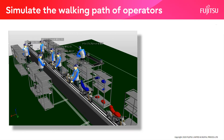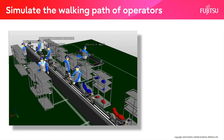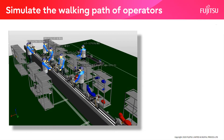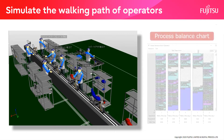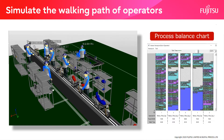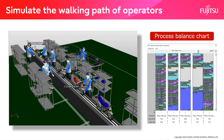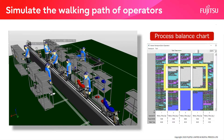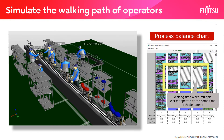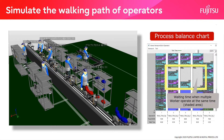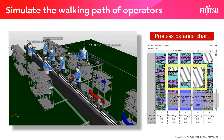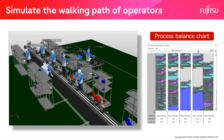The walking time is automatically calculated according to the distance the worker travels to pick up parts. If multiple workers are working at the same time, the waiting time is displayed in the process balance chart. The walking route is color coded for each worker, so you can easily check the points to be improved for each worker.